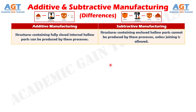Difference number 6. Structures containing fully closed internal hollow parts can be produced by additive manufacturing processes. Whereas, structures containing enclosed hollow parts cannot be produced by subtractive manufacturing processes, unless joining is allowed.